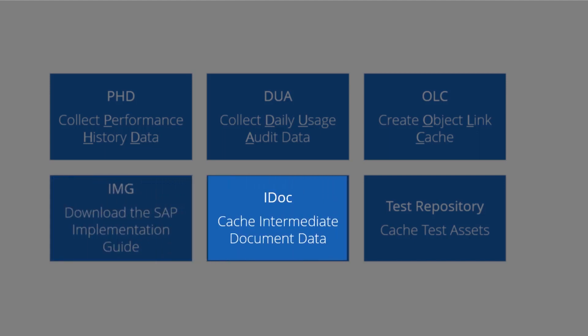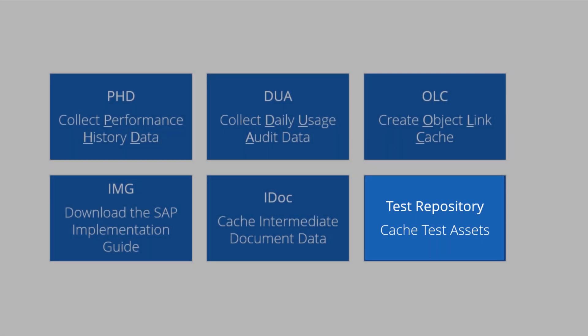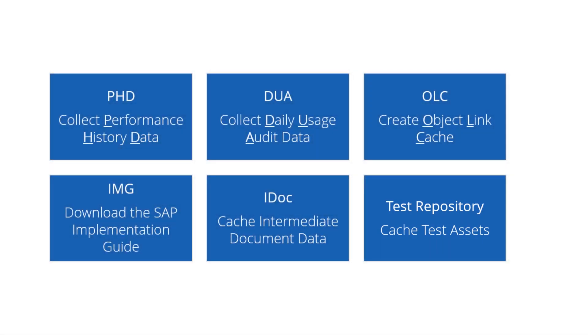IDOC usage is based on some pretty large table reads, so it's best to cache used IDOC data from SAP Production, which will make Smart Impact Analysis run much faster. Finally, we'll cache all available test asset data related to used SAP objects. These last two prerequisites are optional, and Smart Impact Analysis can run without them.